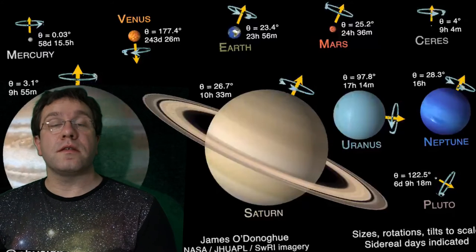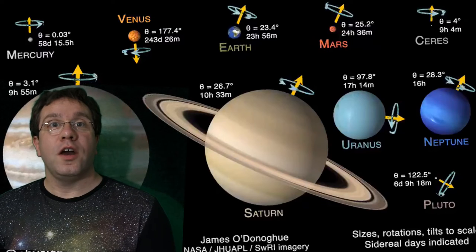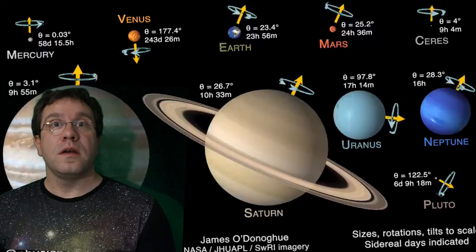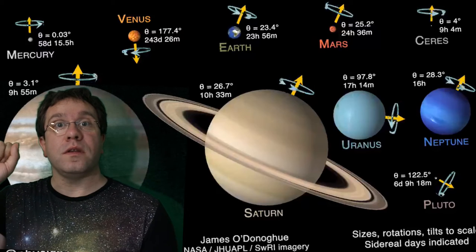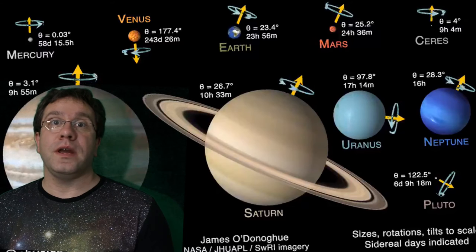The planet that spins the slowest is Venus. Venus takes 243 Earth days to spin once, but it also spins backwards. So really, it spins in minus 243 days, which is really weird.